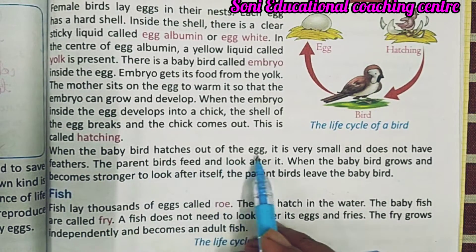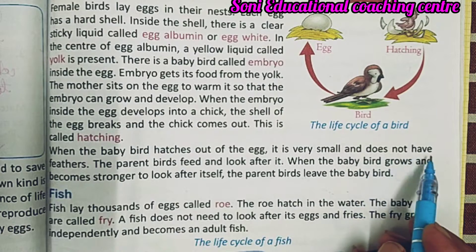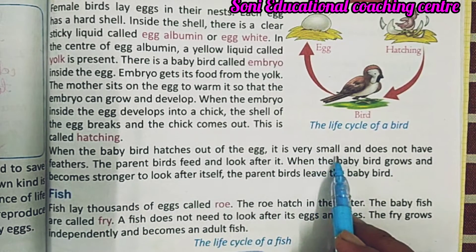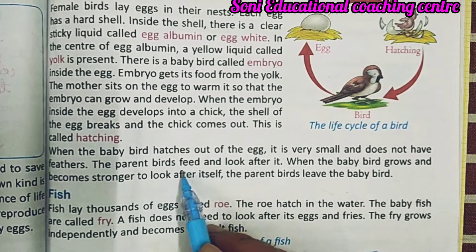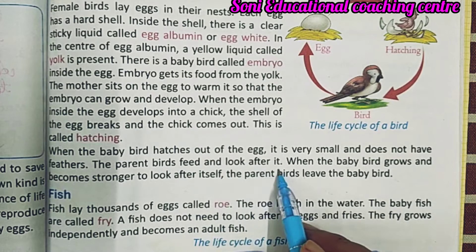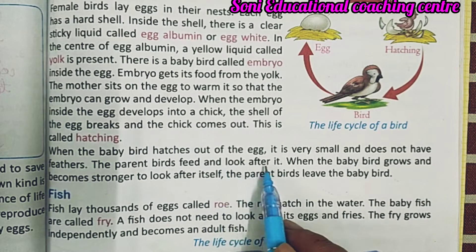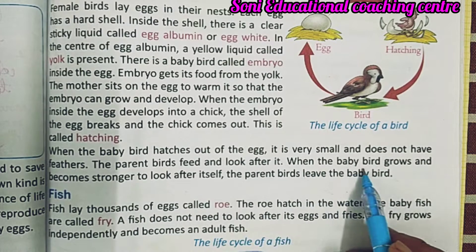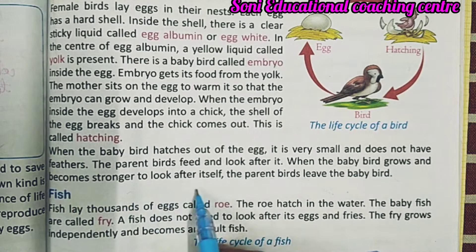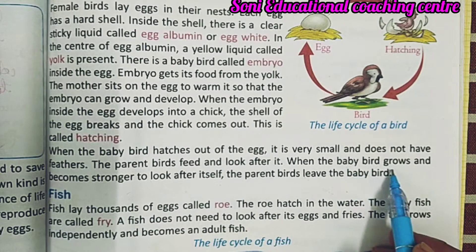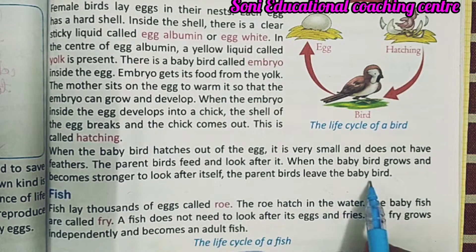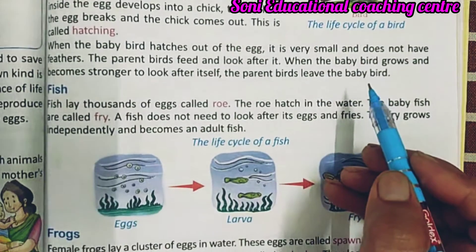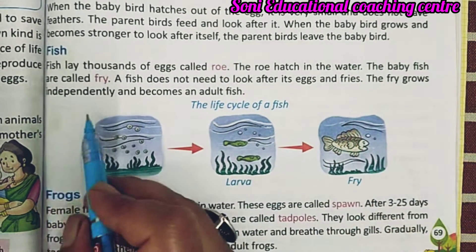When the baby bird hatches out of the egg, it is very small and does not have feathers. जब छोटा पक्षी अंडे से बाहर निकलता है, ना तो वो बहुत छोटा होता है और इसके कोई feathers (पंख) नहीं होते। The parent birds feed and look after it. When the baby bird grows strong enough to look after itself, the parents leave the baby bird.